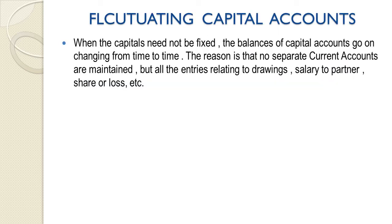Now we will study the Fluctuating Capital Account. We have already studied the Fixed Capital Account. To recap: a capital account is made for partners using two methods. The first is Fixed Capital Account, which involves two accounts — capital account and current account. Now we study the second method, Fluctuating Capital Account. If there is no mention in the question about which capital account to make, we will use the fluctuating capital account method by default.